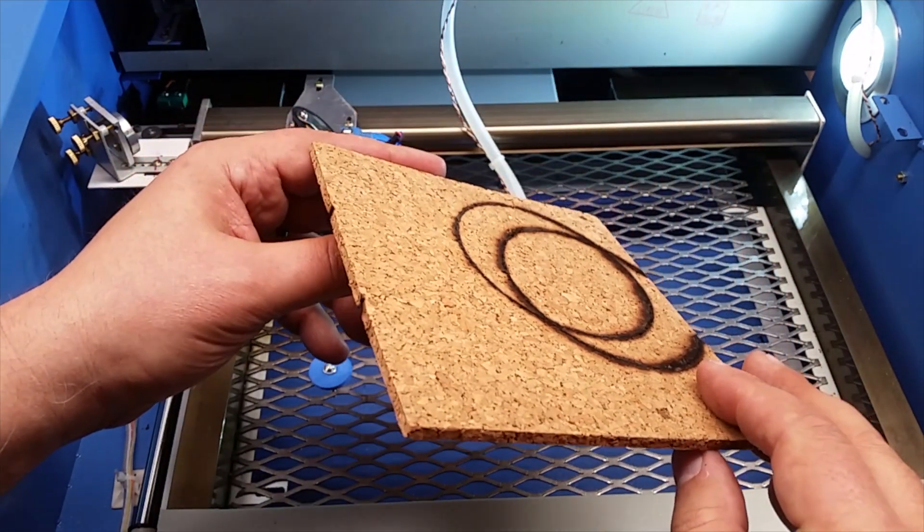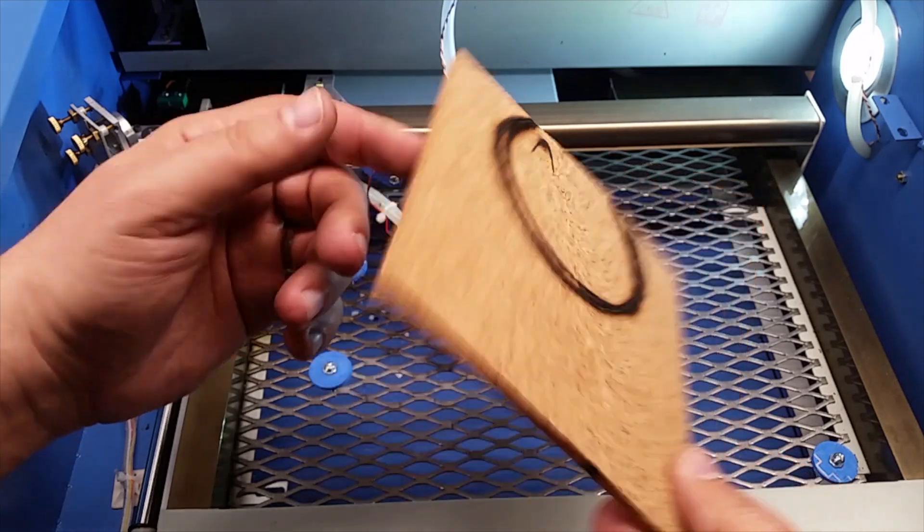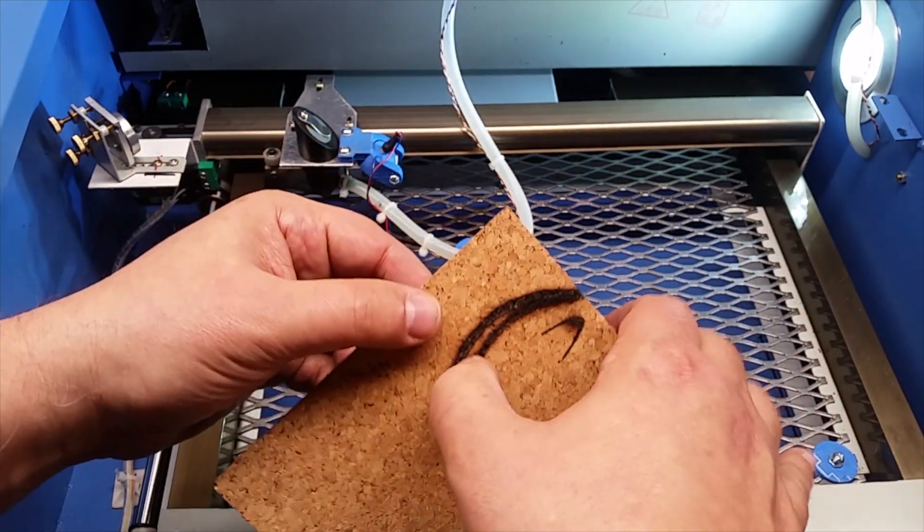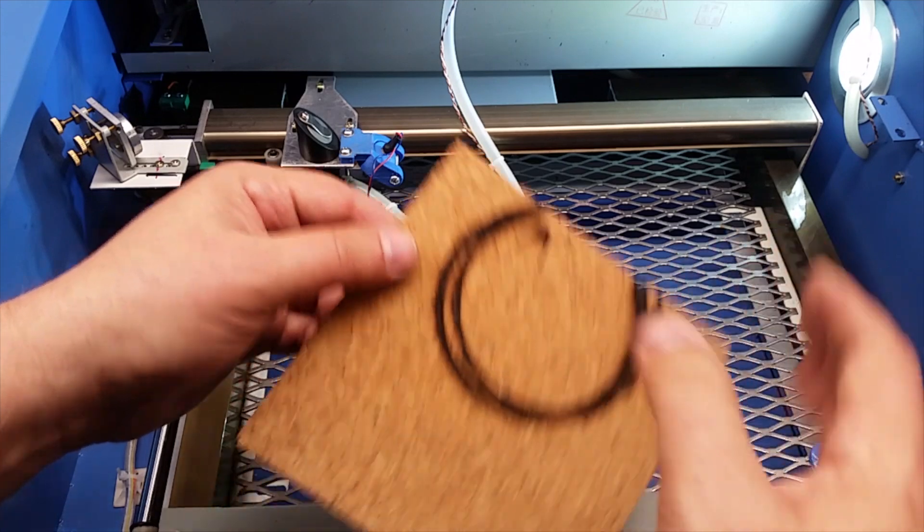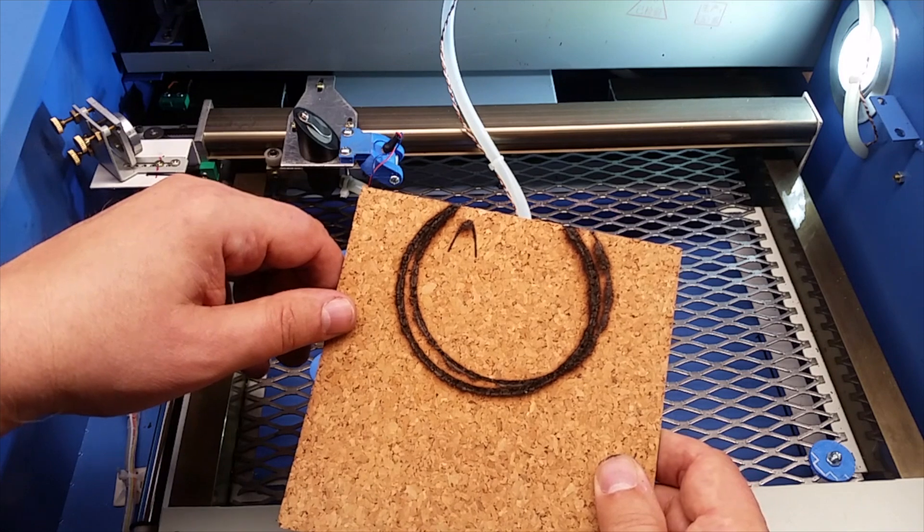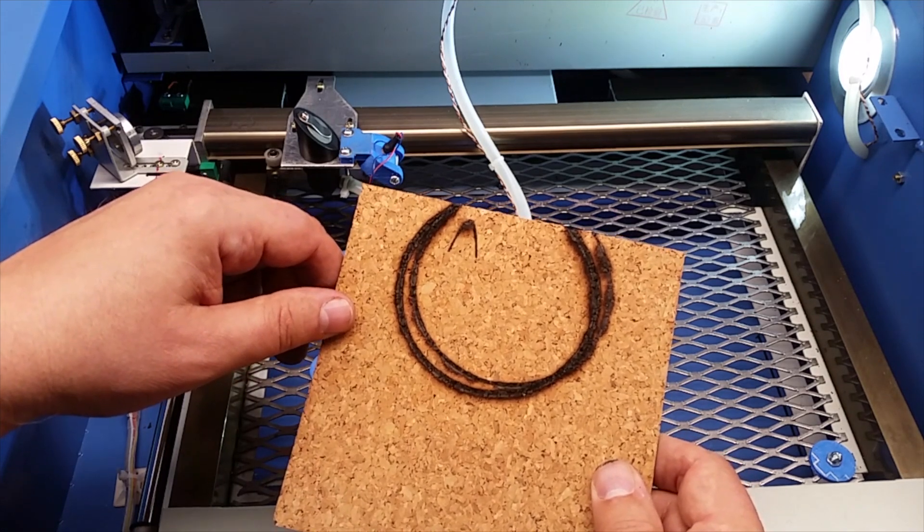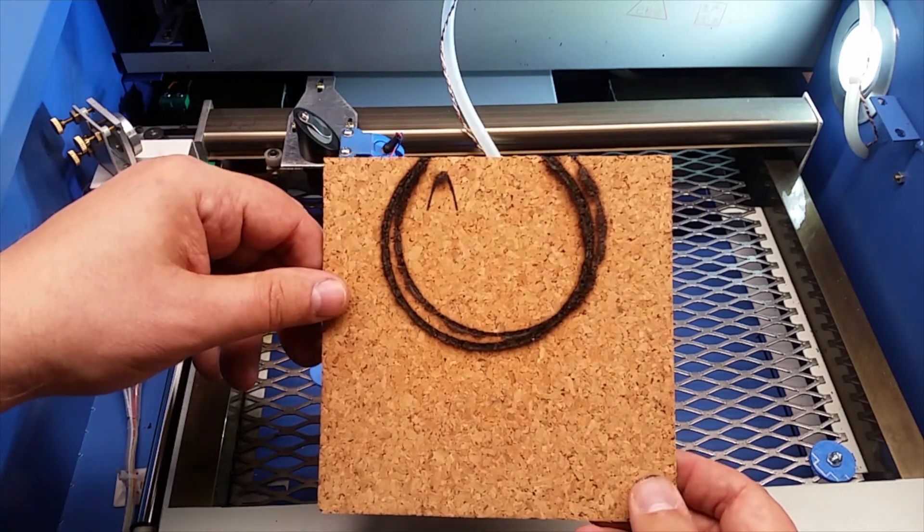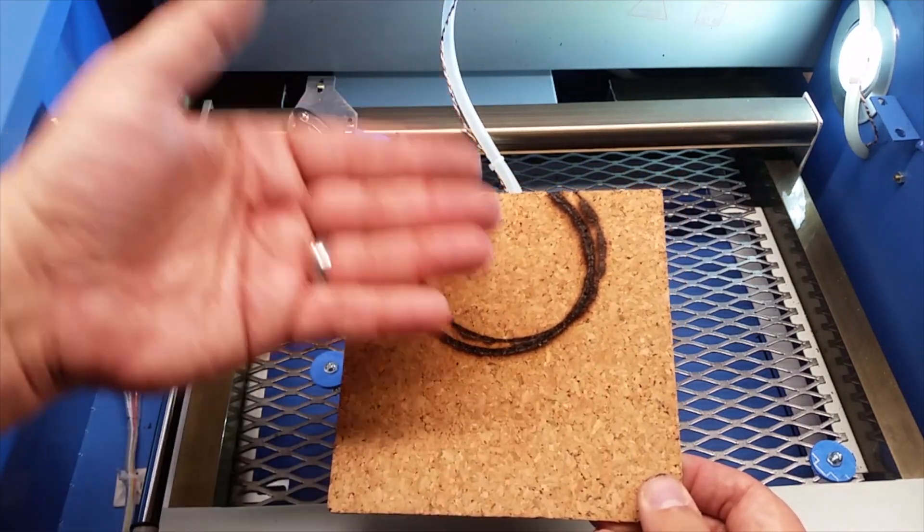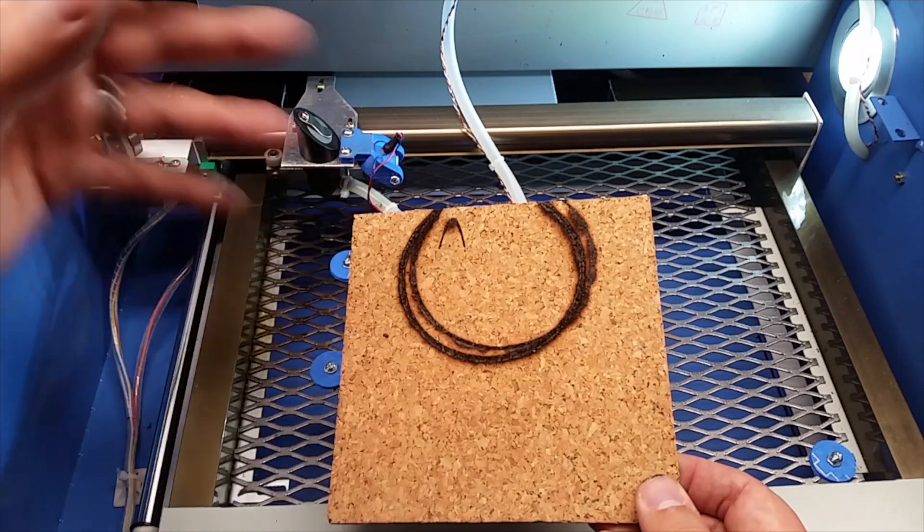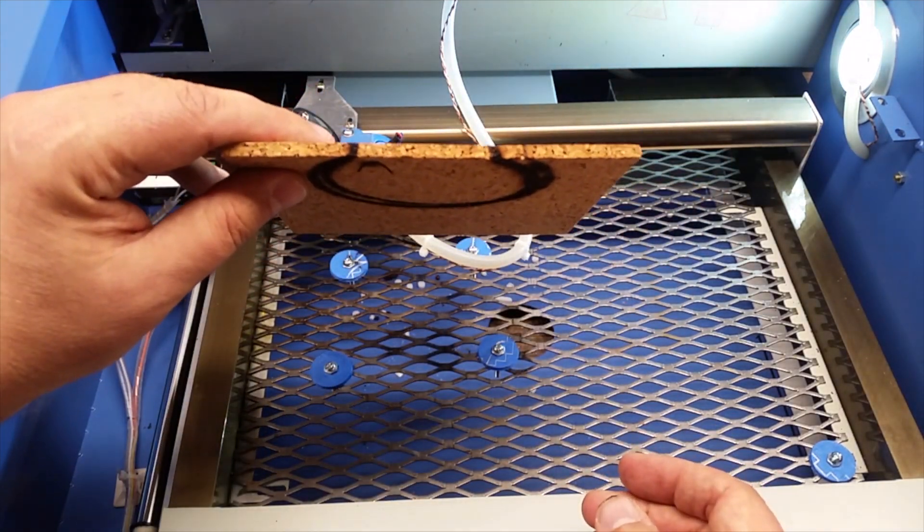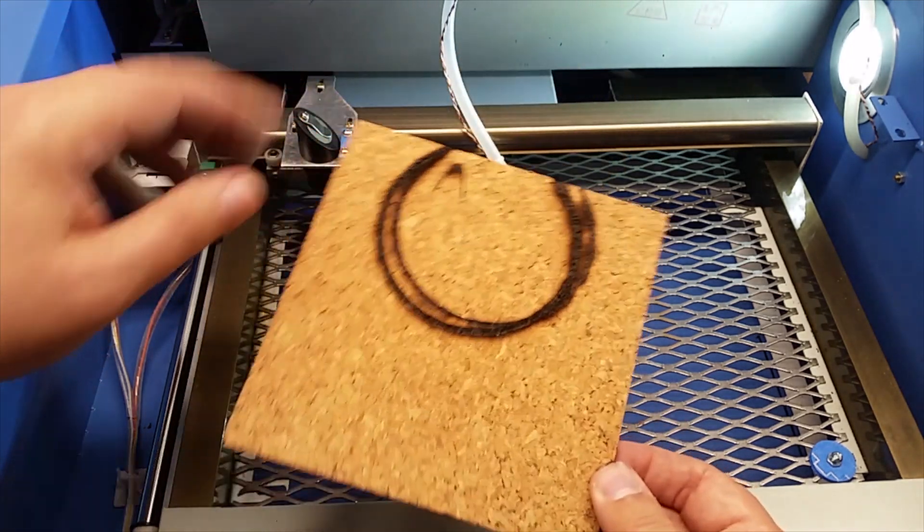I think for engraving it might work, however, as you saw I made multiple passes and it's still not cutting through. So anyways, this is cutting cork. Let me know in the comments below if you've been cutting cork. I've got some thinner stuff I'm going to do another video on. This is actually pretty thick, probably around a quarter inch thick cork.